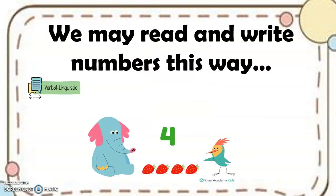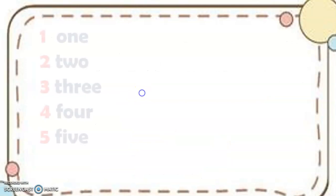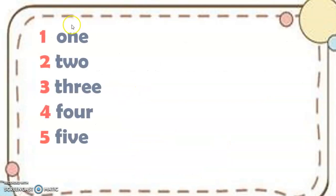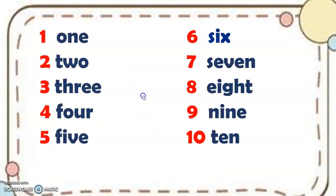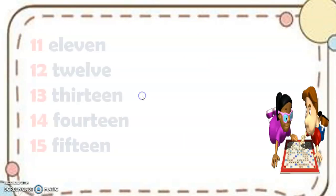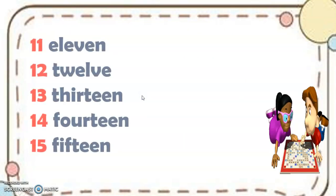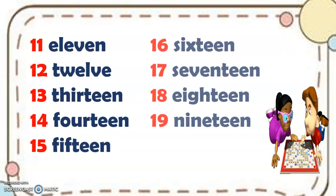We may read and write numbers this way. So we have here 1, 2, 3, 4, 5, 6, 7, 8, 9, 10. Then we have 11, 12, 13, 14, 15, 16, 17, 18, and 19.